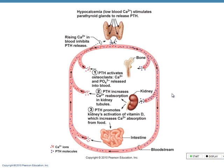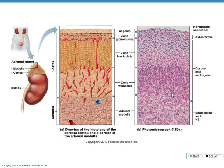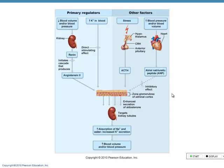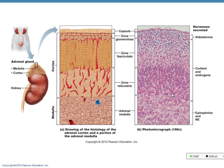In the textbook on page 611, figure 16.13 discusses hypocalcemia — low blood calcium — and increased parathyroid hormone release. Look at that to get an idea of what increased parathyroid hormone does and its effects.